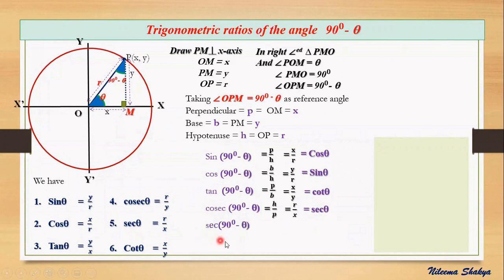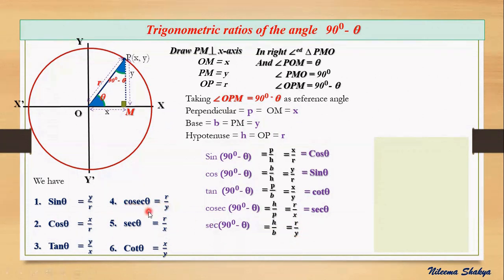Now for sec(90° − θ), its ratio is hypotenuse by base. The hypotenuse is r and the base is y, so sec(90° − θ) = r/y. Looking at ratio number 4 in our list, cosec θ = r/y, so we replace r/y by cosec theta. Therefore sec(90° − θ) = cosec θ.